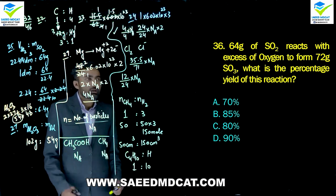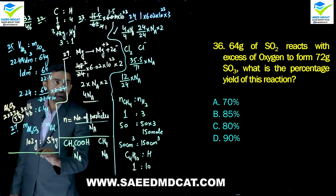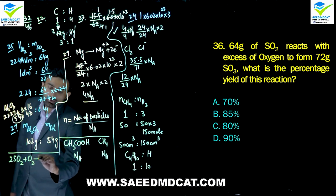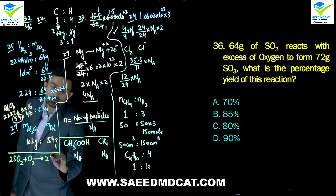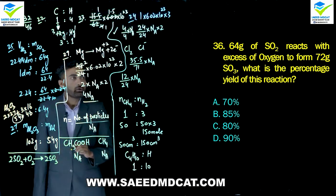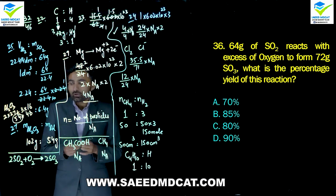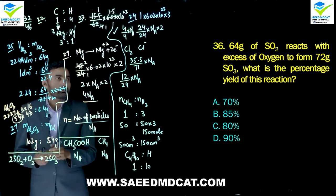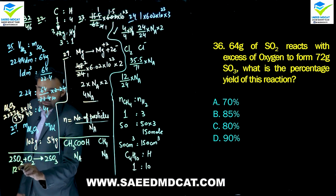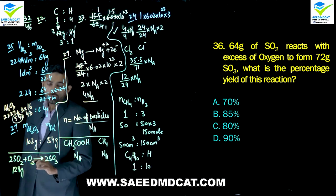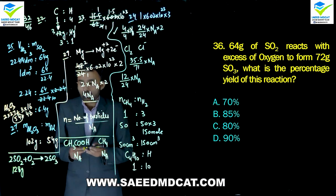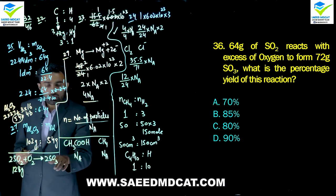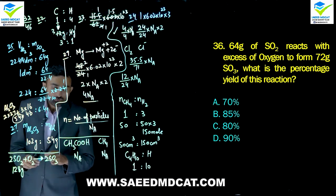Question 36: 64 g of sulfur dioxide reacts with excess oxygen to form 72 g of sulfur trioxide. We need to find percent yield.